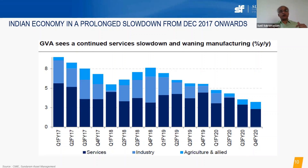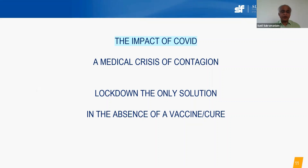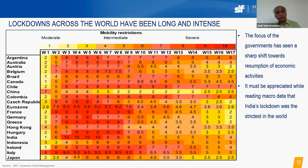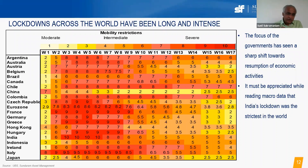The Indian economy was already in a slowdown when COVID hit. As a medical crisis of contagion, a lockdown was the only solution available globally since no vaccine or cure existed. India went to the most severe lockdown — rank 10 for four weeks — before gradually unlocking. On top of an already slowing economy, the COVID crisis hurt us, and the lockdown hurt us further because when people can't travel, they can't spend or consume, affecting demand.